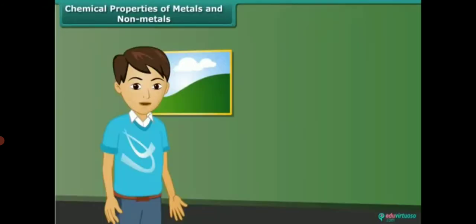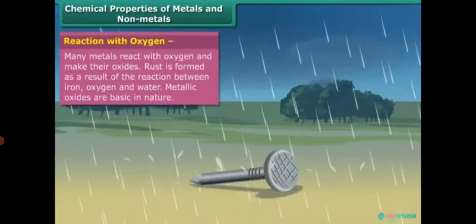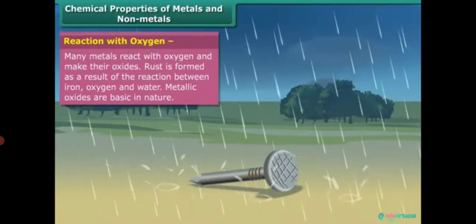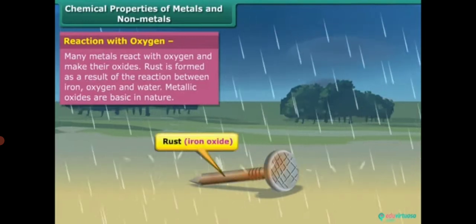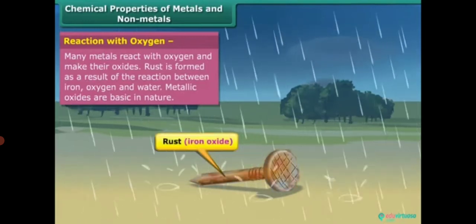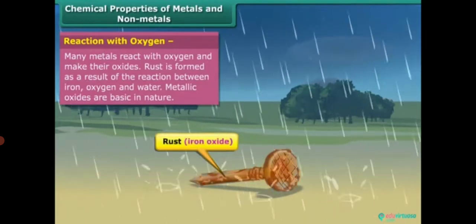Students, after discussing about physical properties of metals and non-metals, let us know about their chemical properties. Metals like iron, copper, magnesium, etc. react with oxygen and make their oxides. These oxides are basic in nature.